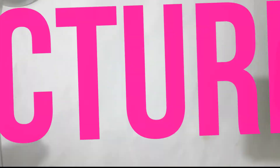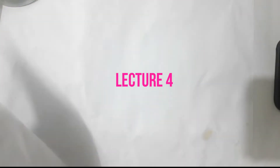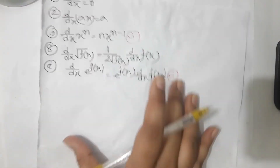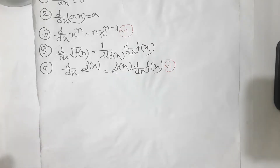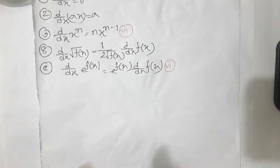Now we have to give the recipe for 1.5 to 4. We will give the recipe for 3.5 to 4, and we will give the recipe for 2.5 to 4.5 to 5, and we will give the recipe for 3.5 to 5.5 to 5.